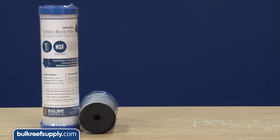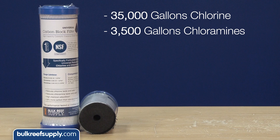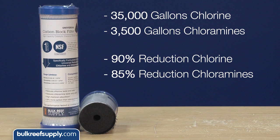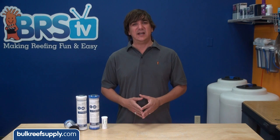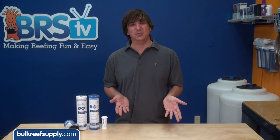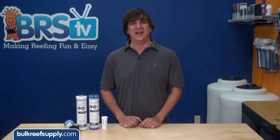The BRS universal block is capable of treating for chlorine up to 35,000 gallons and chloramines up to 3,500 gallons. Our blocks and replacement points are rated for 90 percent reduction on chlorine and 85 percent reduction on chloramines, which is likely where the average reefer will replace them. Most competitive filters in our industry are rated as low as 50 percent removal, which is somewhat misleading since most of us change them long before that.